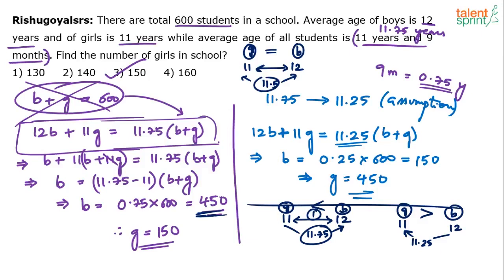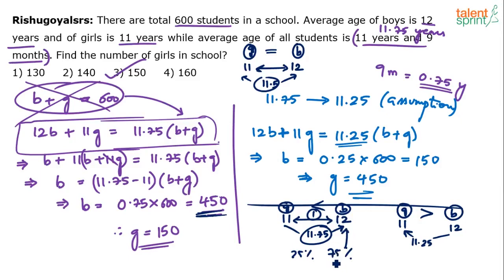The average is shifting towards the girls' side in the 11.25 case. The breakup is 25% and 75%. The 25% is towards boys and 75% is towards girls — that is why the average falls closer to the girls. You can solve this without pen on paper once you understand this.